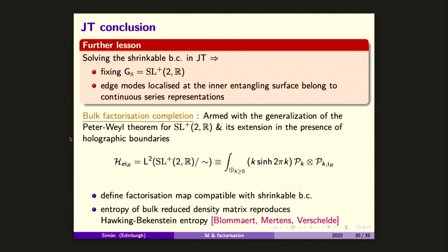The shrinkable boundary conditions fix the notion of edge mode symmetry — what I call G_S in the 2D Yang-Mills case — to be the semigroup SL(2,R)+, and the representations that appear are the continuous series representations. Using this data and the same tricks as in the 2D Yang-Mills case, we can factorize the Hartle-Hawking state in this way.